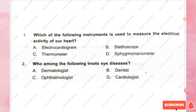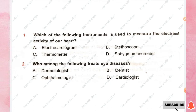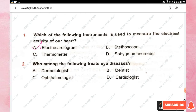Question number one: which of the following instruments is used to measure the electrical activity of our heart? Options are electrocardiogram, stethoscope, thermometer, and sphygmomanometer. The right answer is option A, electrocardiogram.